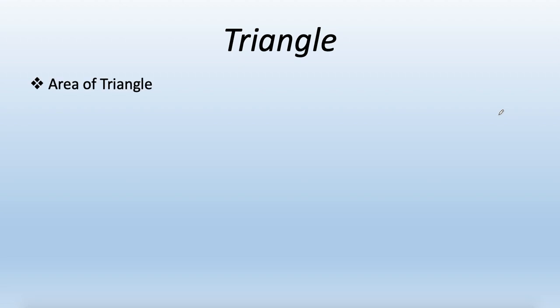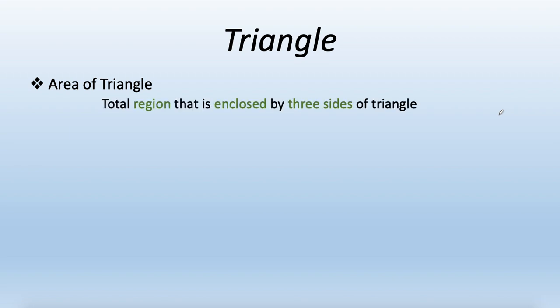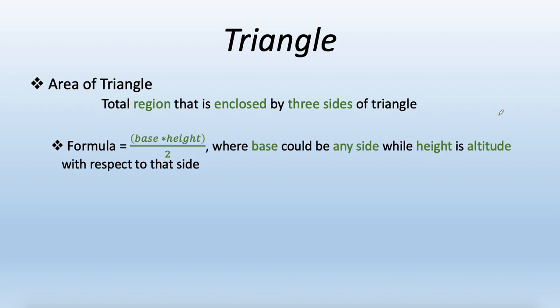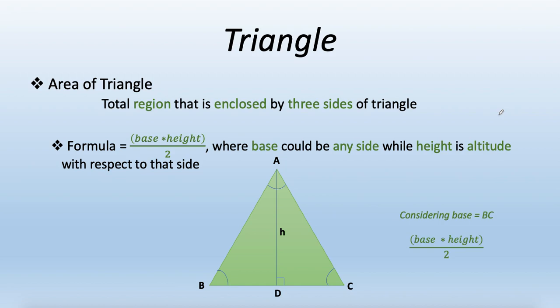Now let's move to the area of a triangle. The area is the region enclosed or bounded by the three sides. The formula for finding the area is base times height divided by two. The height is always the perpendicular distance from the opposite vertex to the base you are considering. For triangle ABC with BC as base, AD is the height, so area equals BC times AD divided by two.